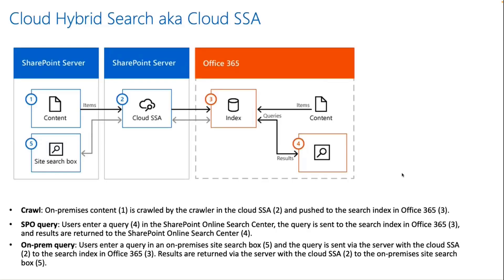Cloud SSA, or Cloud Hybrid Search, is our SharePoint hybrid search solution. If you have a SharePoint on-premises installation — it could be 2013 or 2016 — and some of your content is sitting in SharePoint Online, you can use Cloud SSA to index on-prem content, whether it's inside your SharePoint installation, a file share, a website, or other on-prem data sources. This solution brings all the index into one single location in the Office 365 cloud, and lets you query from both sides.